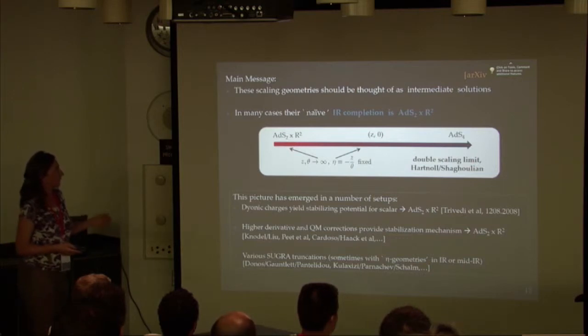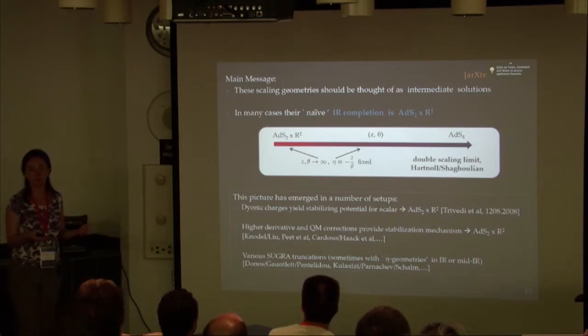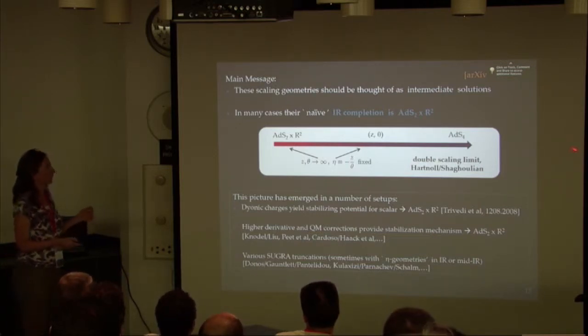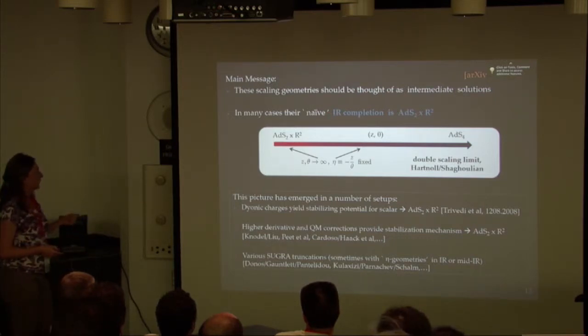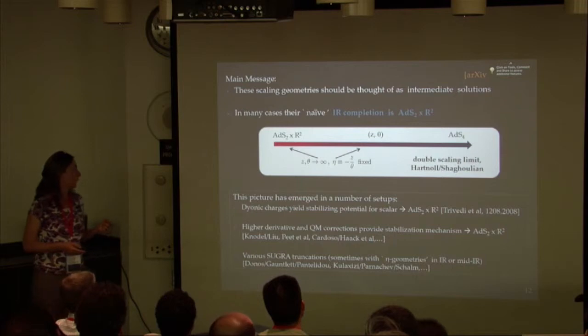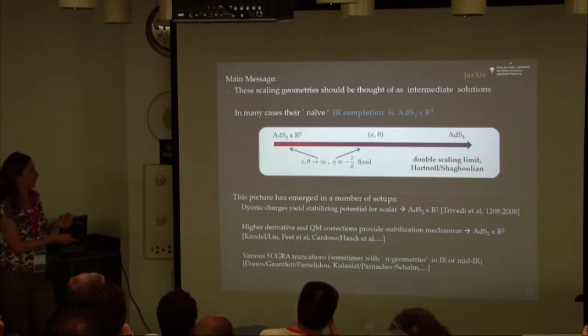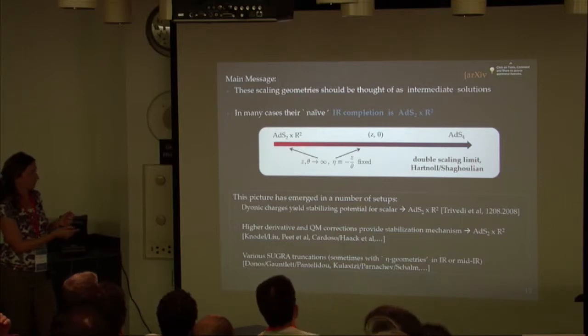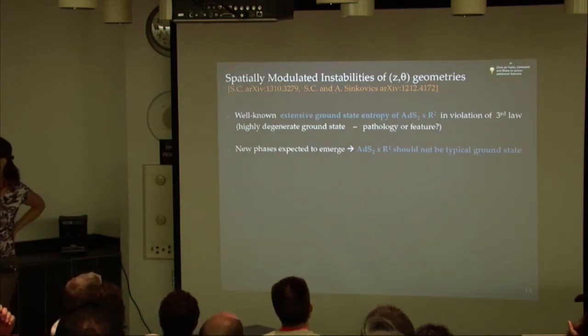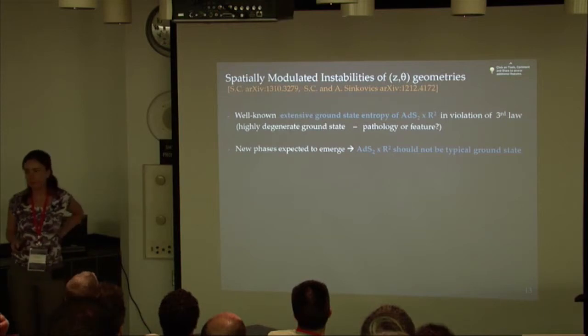The main message of our paper was that in general, you should think of the scaling solution as being intermediate, although you could certainly find cases where you could uplift them to higher dimensions, maybe get them from string theory. But more generally, at least some set of solutions should really be thought of as intermediate and flow into something else in the infrared. AdS2 times the plane could be one example of this. This has been verified in different settings. Clearly if you turn on both electric and magnetic fields, you'll naturally flow to AdS2 times the plane.